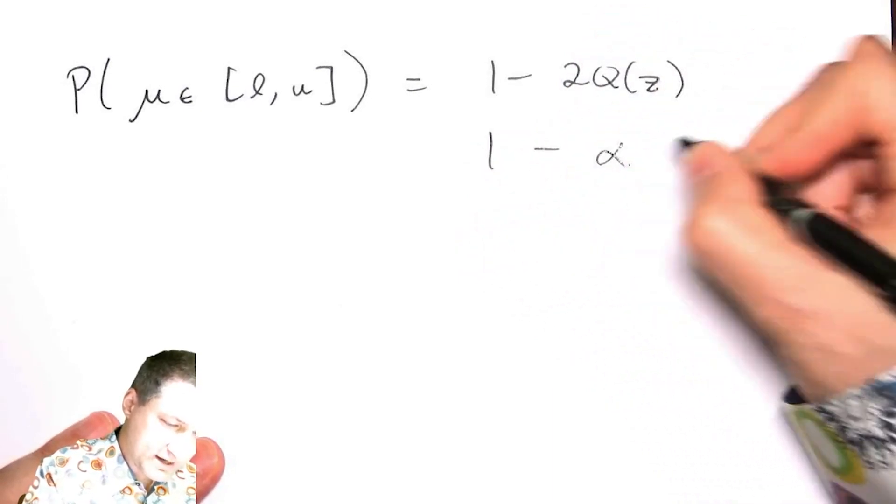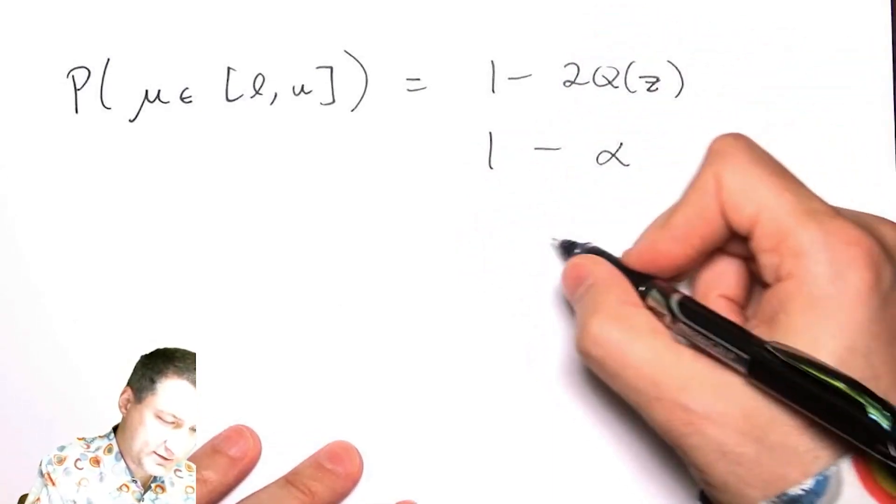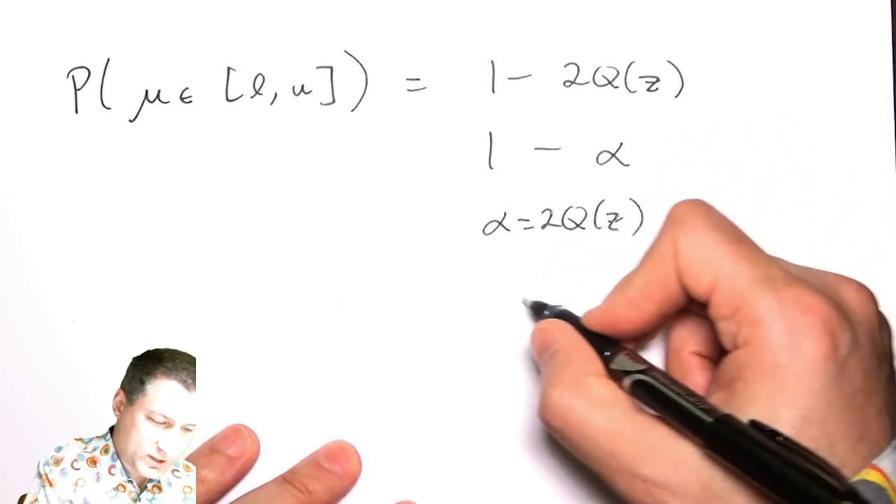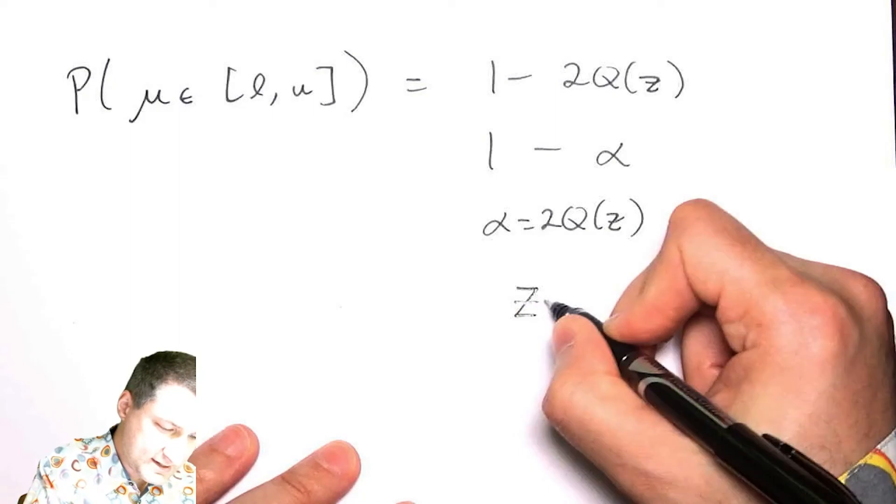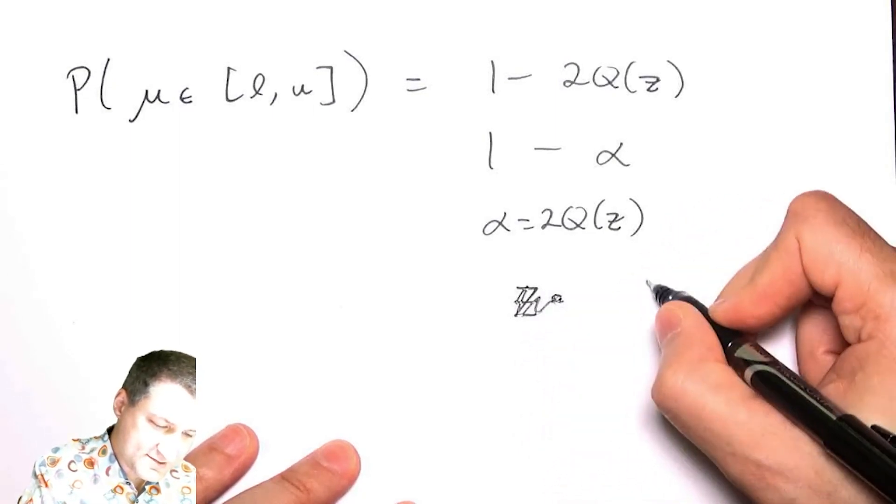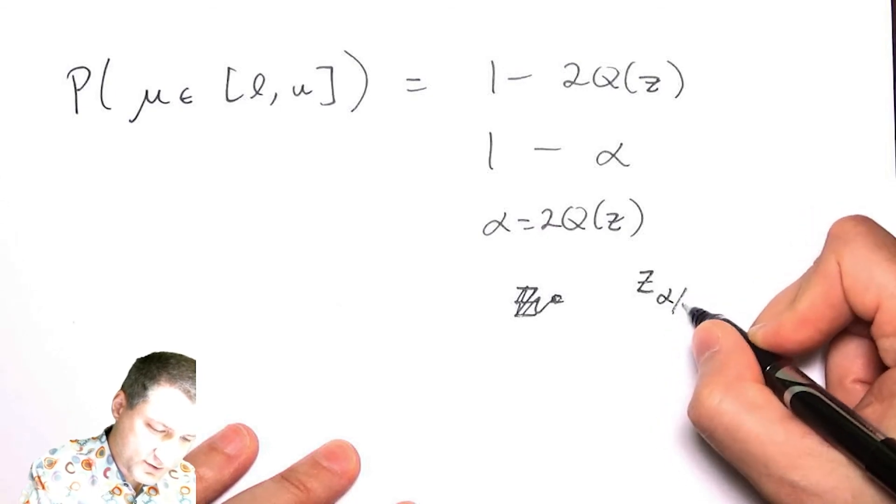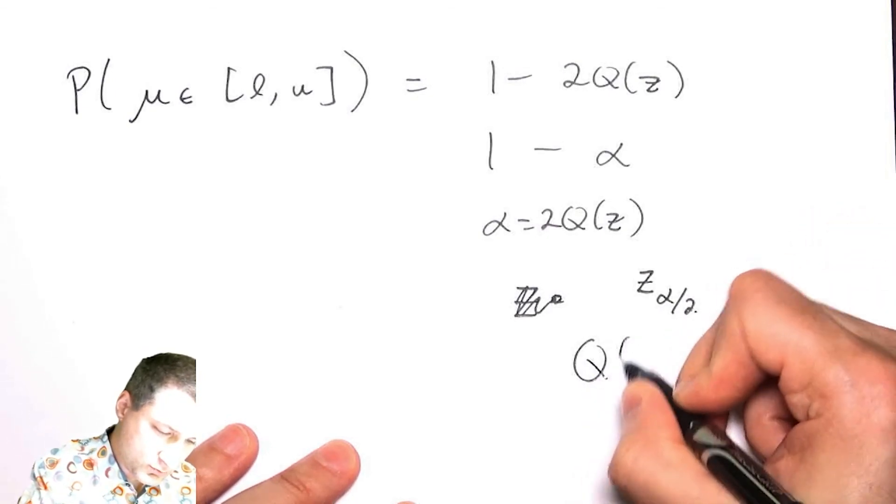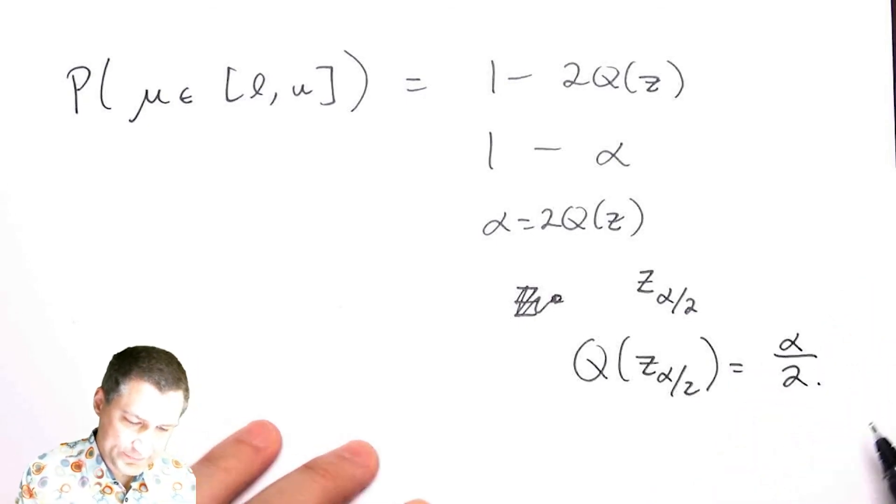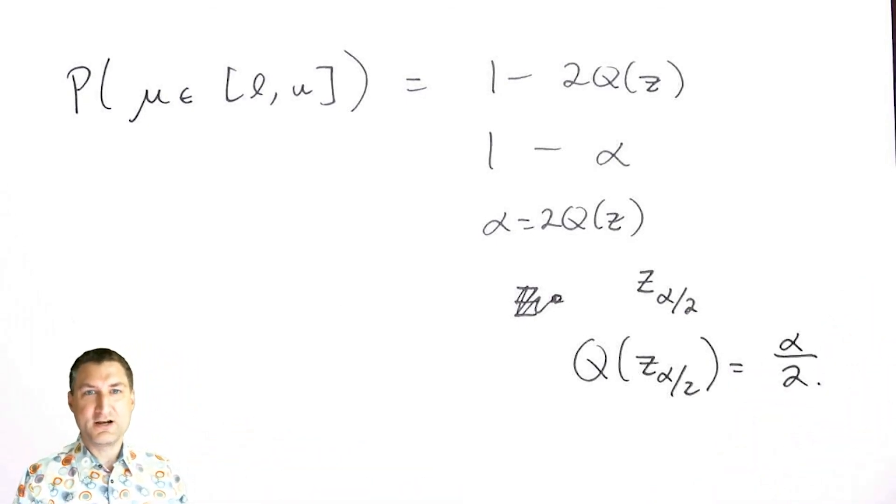So α = 2Q(z), or a different way of saying it is that I want to find z_{α/2} such that Q(z_{α/2}) = α/2. Luckily, there are tables that come from the Q function that give me exactly these numbers.